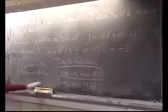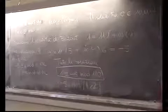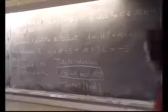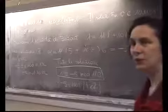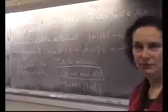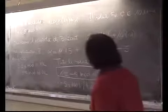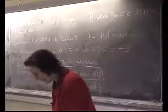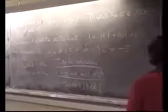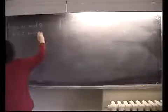Ci sono anche dei giochini — ad esempio, avendo un contenitore da 7 litri e uno da 13 litri, dosare esattamente 2 litri — che sono congruenze. Vediamo ora un caso diverso per capire come ci si regola: x ≡ 11 (mod 8) e x ≡ 7 (mod 10). Il massimo comune divisore tra 8 e 10 è 2: non valgono le ipotesi del teorema cinese.